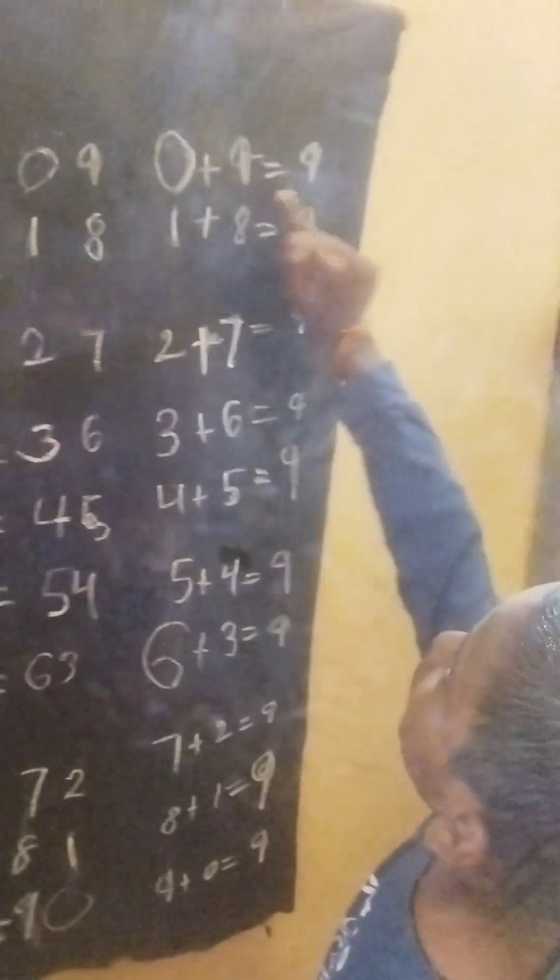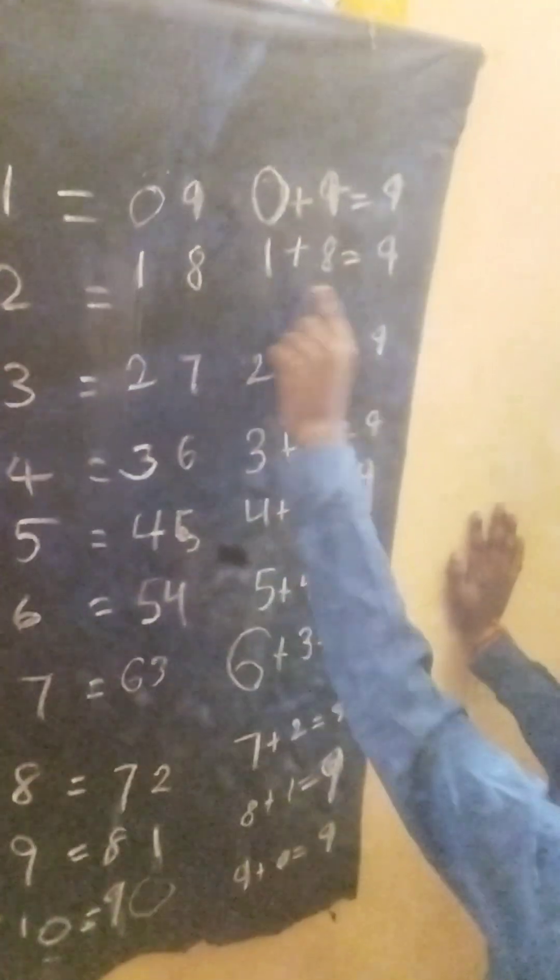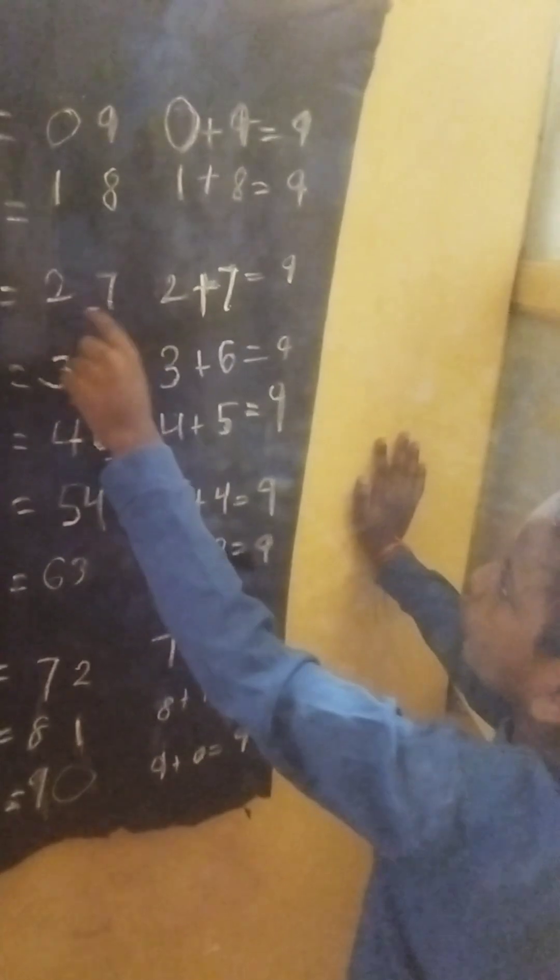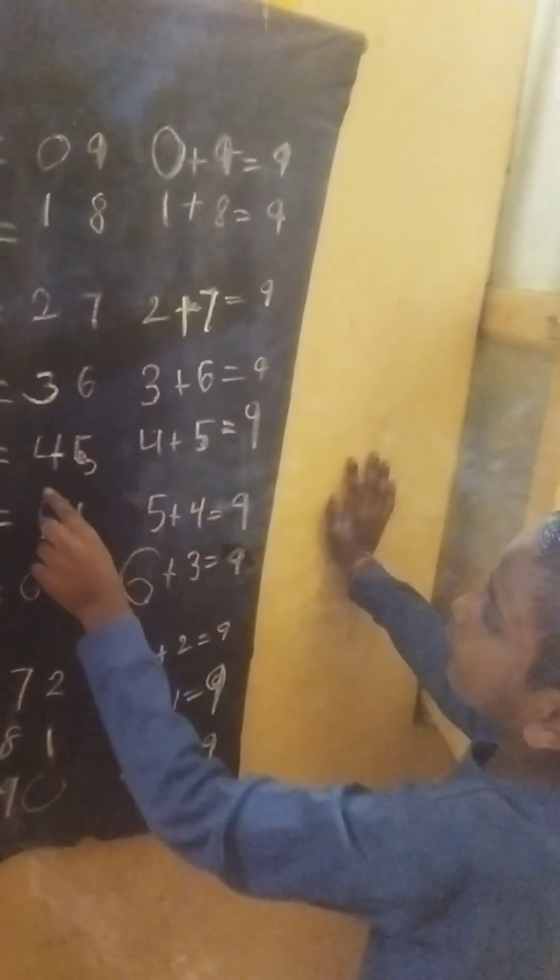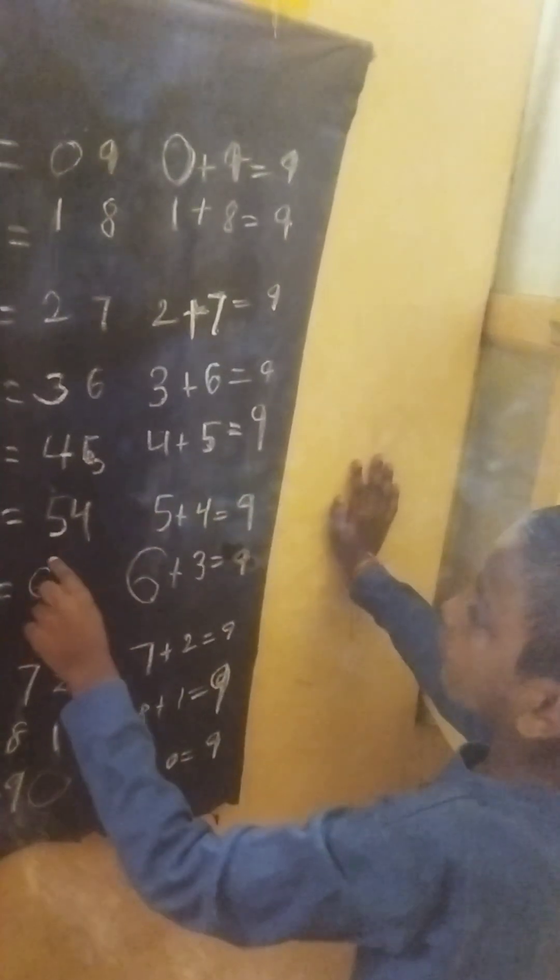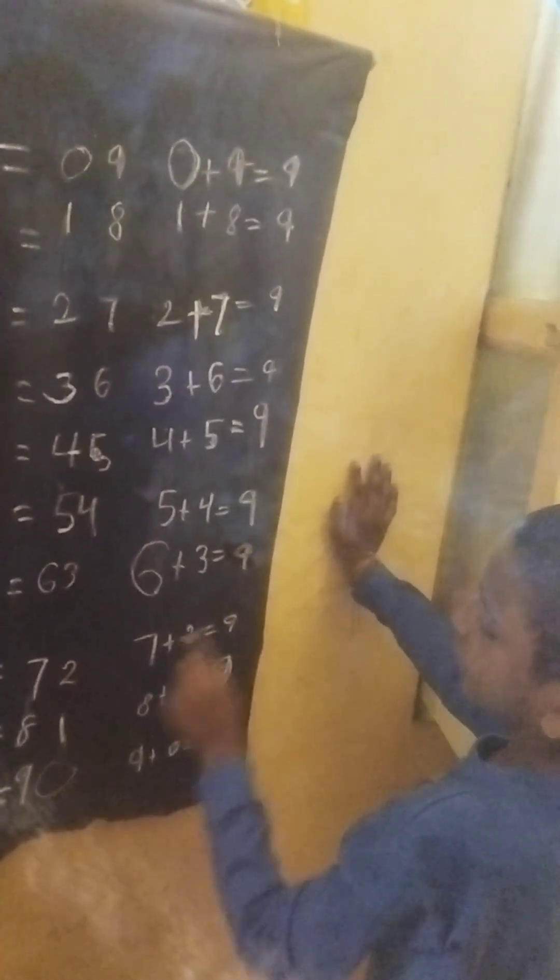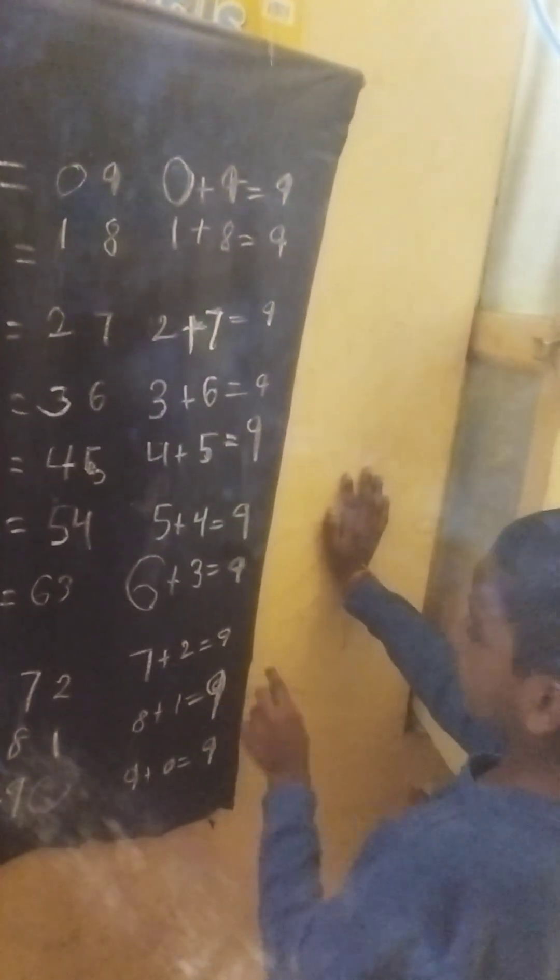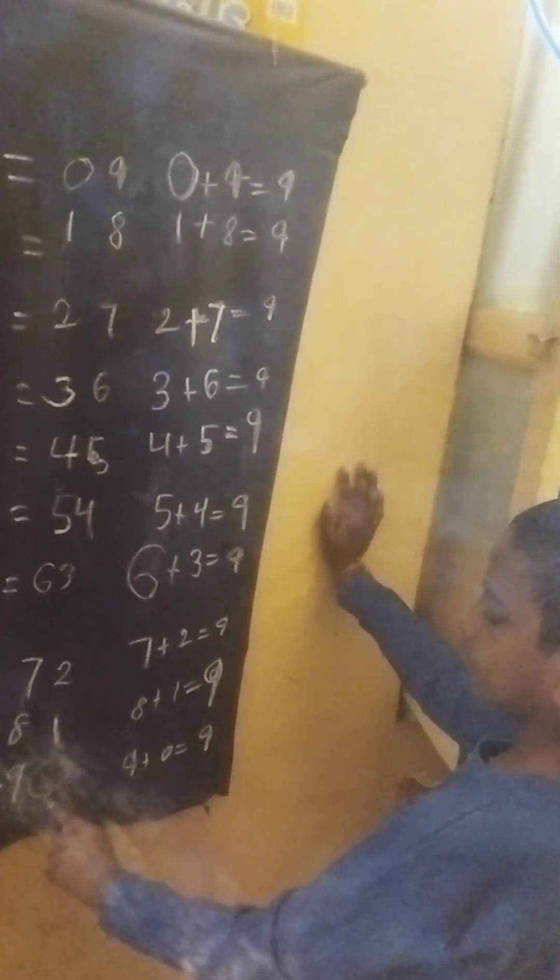0 plus 9, 9. 1 plus 8, 9. 2 plus 7, 9. 3 plus 6, 9. 4 plus 5, 9. 5 plus 4, 9. 6 plus 3, 9. 7 plus 2, 9. 8 plus 1, 9. 9 plus 0, 9.